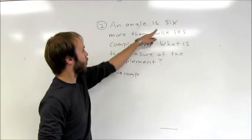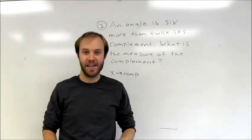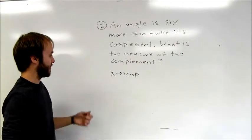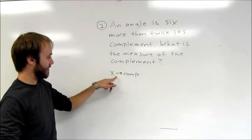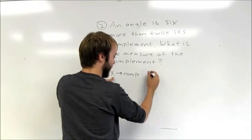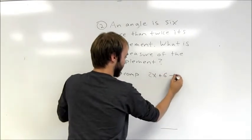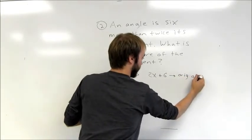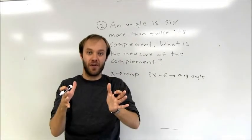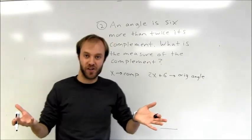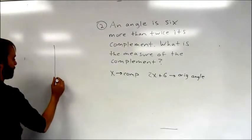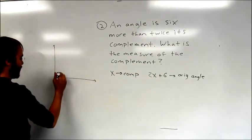The other angle is 6 more than twice the complement, so I represent it using the x variable. If the complement is x, then the other angle is 2x plus 6. These two angles are complementary, meaning they add up to 90 degrees to form a right angle. Visually, I draw a picture combining the two angles to make a right angle — one angle is x, the other is bigger.